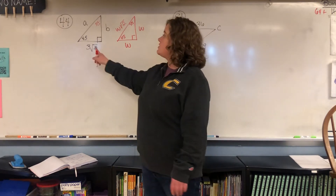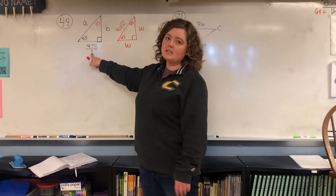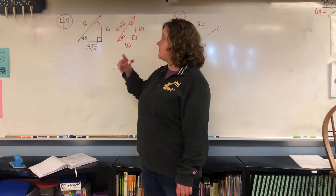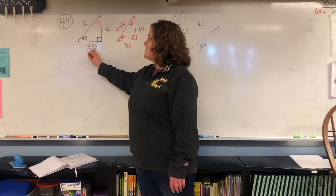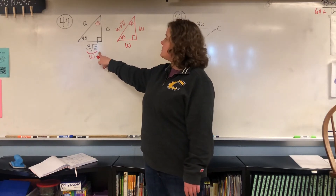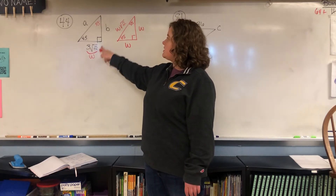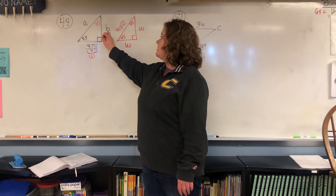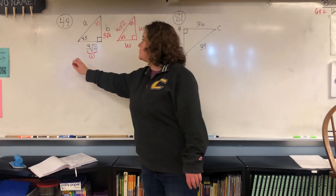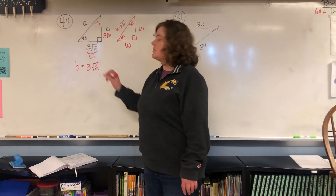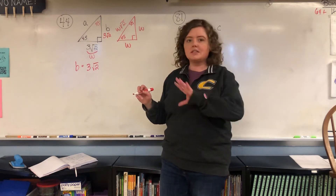They're just trying to throw you off in this problem again by already having a square root of two down here, but I'm going to show you what to do. So this is our W — this is our side — so this is three square root of two. This side needs to be three square root of two as well, so B is three square root of two. It's just the same number.